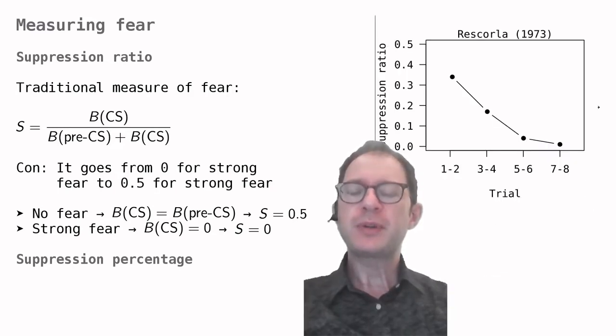So, if we graph the suppression ratio during an experiment, we see that as the animal learns to be afraid, the suppression ratio goes down.